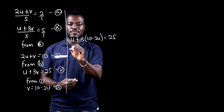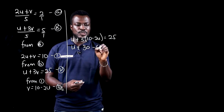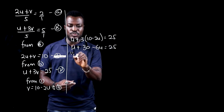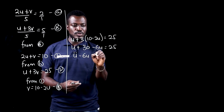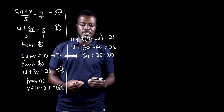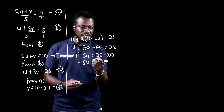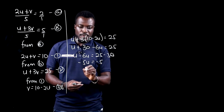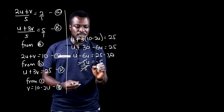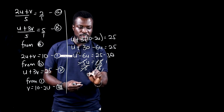Substituting v = 10 − 2u into equation 2 gives us u + 3(10 − 2u) = 25. Expanding the bracket: u + 30 − 6u = 25. Grouping like terms: u − 6u = 25 − 30, so −5u = −5. Dividing both sides by −5 gives u = 1.